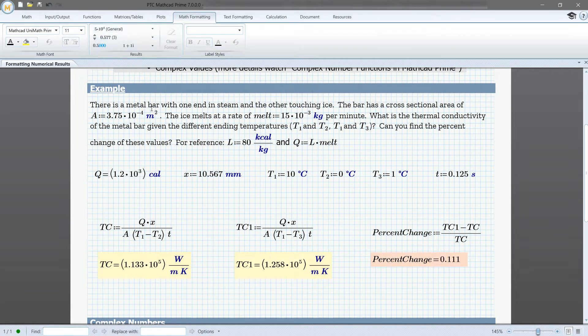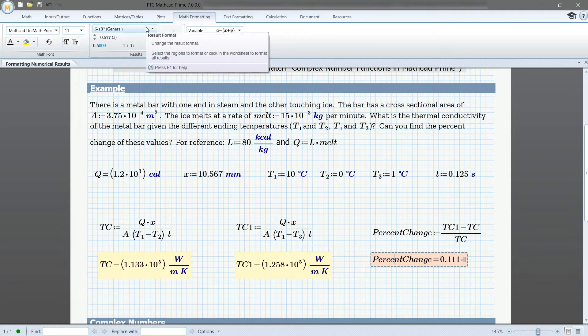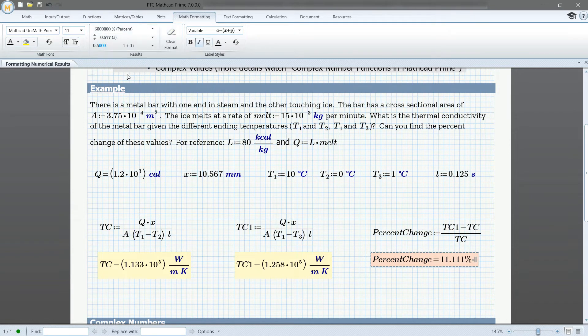This formatting can be set for an entire page or for an individual result. For example, if we only want the percent change variable to be represented as a percent, we can click here and customize the specific settings. It will not be affected by the page settings unless we clear this.